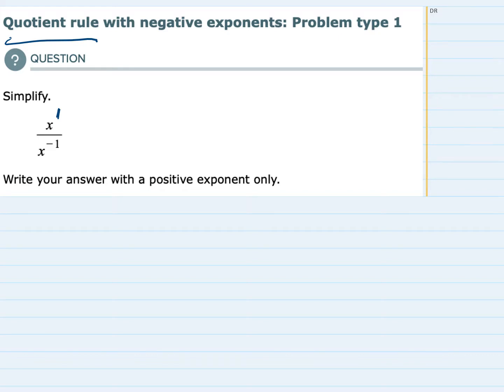So just using the Quotient Rule, I can rewrite this as x to the power of the top, 1, minus the power of the bottom. So it's minus a negative 1. So this is the Quotient Rule part, but